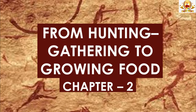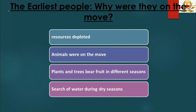Keeping what we have learned from Chapter 1 in mind, let us move to Chapter 2, 'From Hunting Gathering to Growing Food,' which covers the stone ages. It discusses the lives of the earliest people who inhabited the Indian subcontinent, sources that help us understand their lives, their geographical spread, and why early people moved from place to place. The earliest people who inhabited the Indian subcontinent were hunters and gatherers who lived about 2 million years ago.